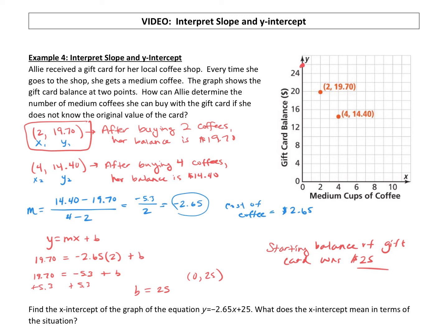All right, so the question is asking how can Allie determine the number of medium coffees she can buy. Well, she has a $25 gift card. We said that the cost of a cup of coffee was $2.65, so we can just take her $25, divide it by the cost of a coffee, $2.65, and see how many she can get. If you take 25 divided by 2.65, you actually get 9.433. So she can't buy 0.4 of a cup of coffee, so we're going to round that down. She can buy nine coffees with this gift card.